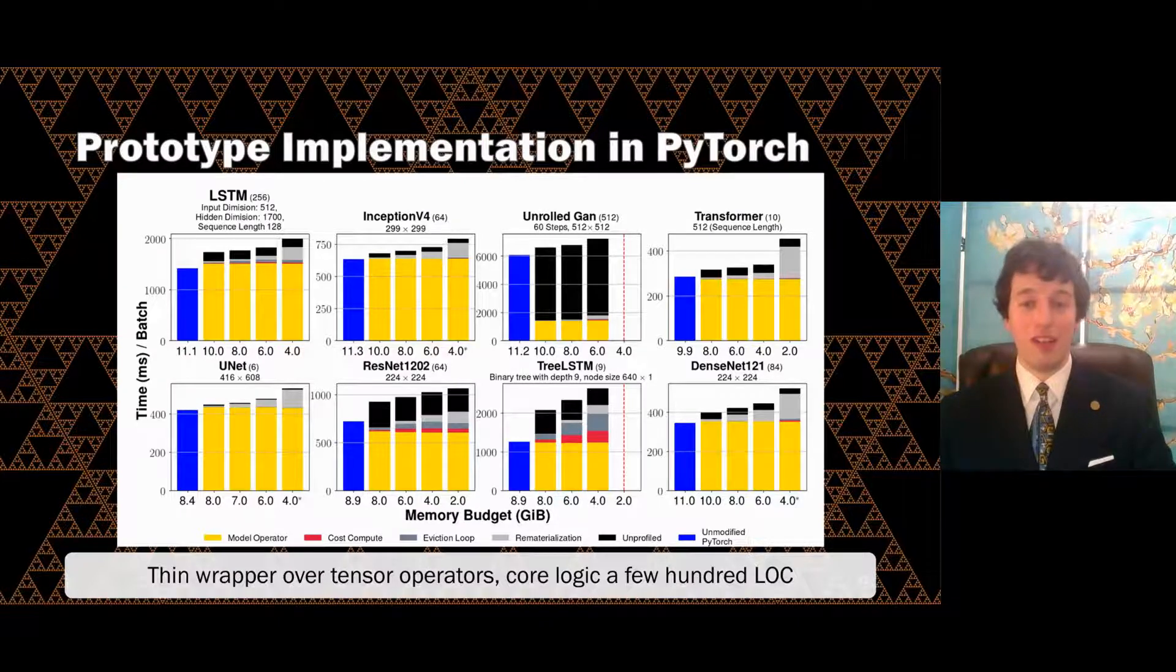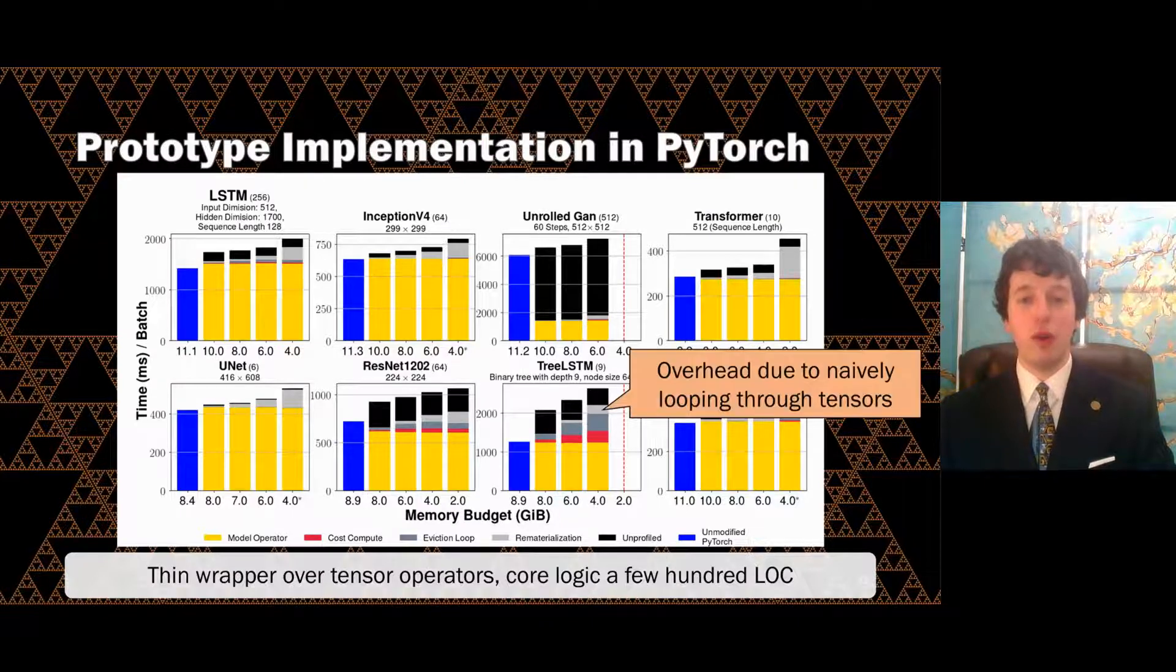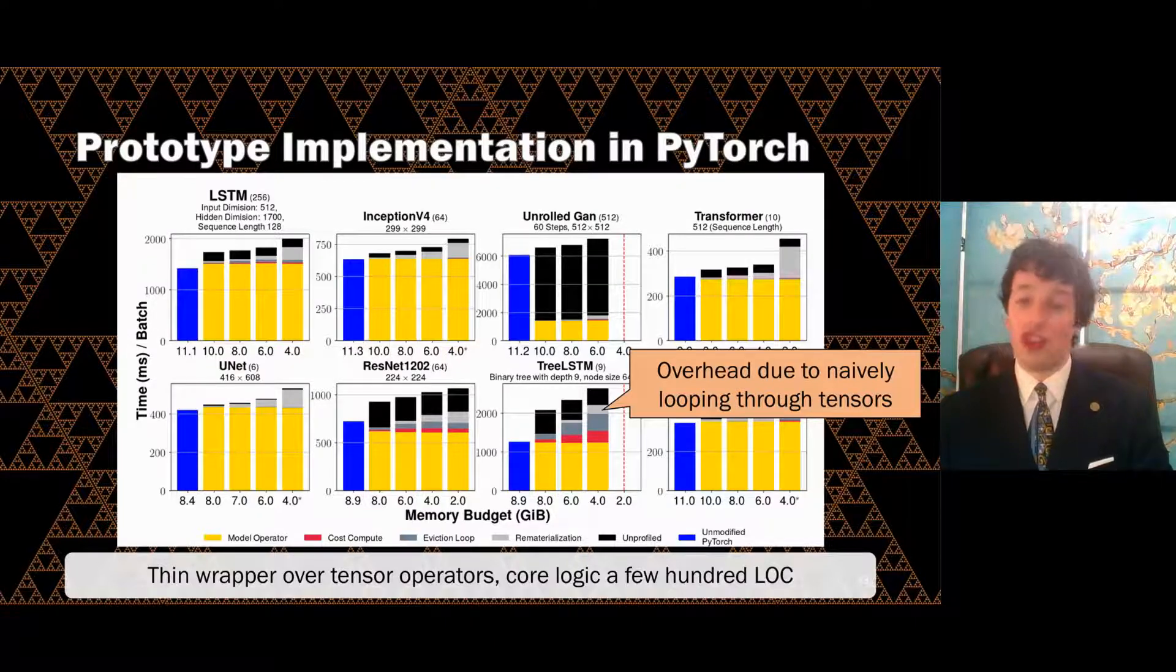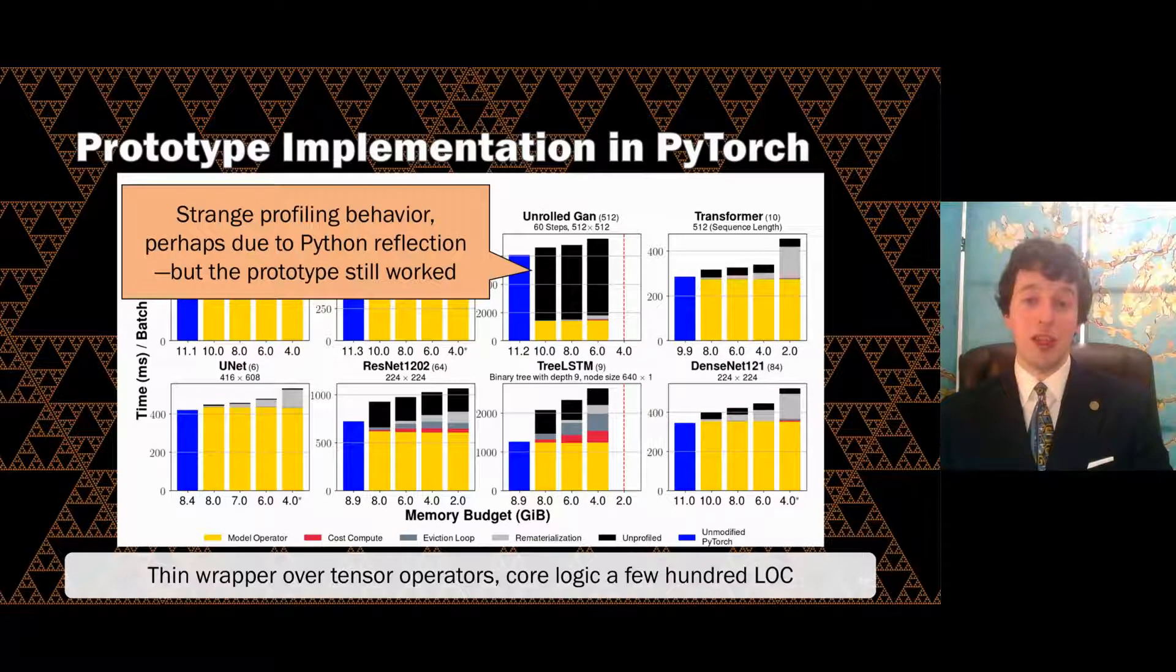Even without making any deep modifications to PyTorch's memory allocator, our prototype was able to run training batches under much lower budgets. The prototype naively loops over tensors when it's time to choose an eviction, and it recomputes heuristic values each time, but despite the simplicity of its implementation in these very simple choices, the runtime overhead was nevertheless much less than the cost of the baseline GPU computations, and it can surely be further reduced with more implementation effort. And as with the simulated trials, we ran some dynamic models, including UnrolledGAN, which the prototype handled out of the box.